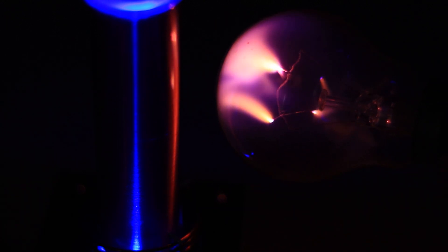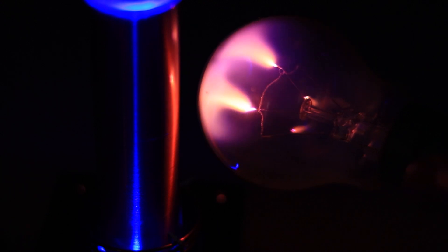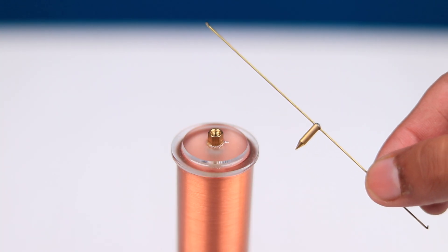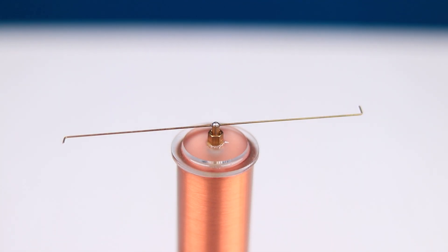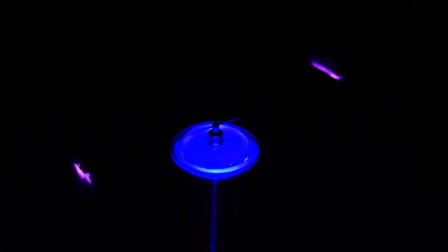Let's use the other two accessories and see what happens. Let's first install the iron windmill accessory. Here it is. Let's turn on the Tesla coil. As you can see, as soon as we turn on the Tesla coil it starts to rotate.